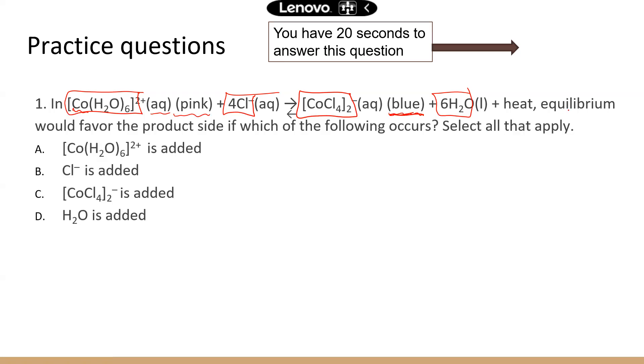So the question asks, equilibrium would favor the product side. So you're trying to move the chemical reaction from left to right. If you want the reaction to move to the right, you could increase reactant concentrations. Because the more reactants you have, the more the chemical equilibrium wants to use that reactant and go to the right.